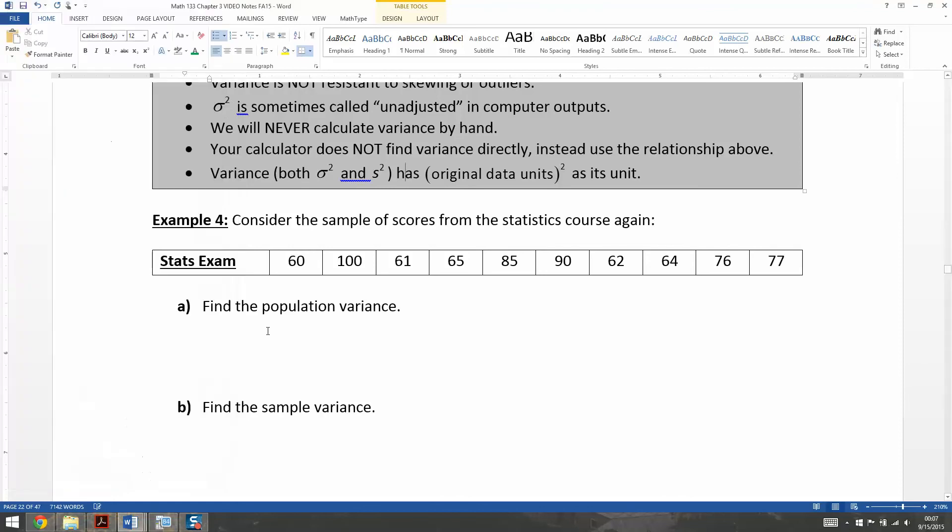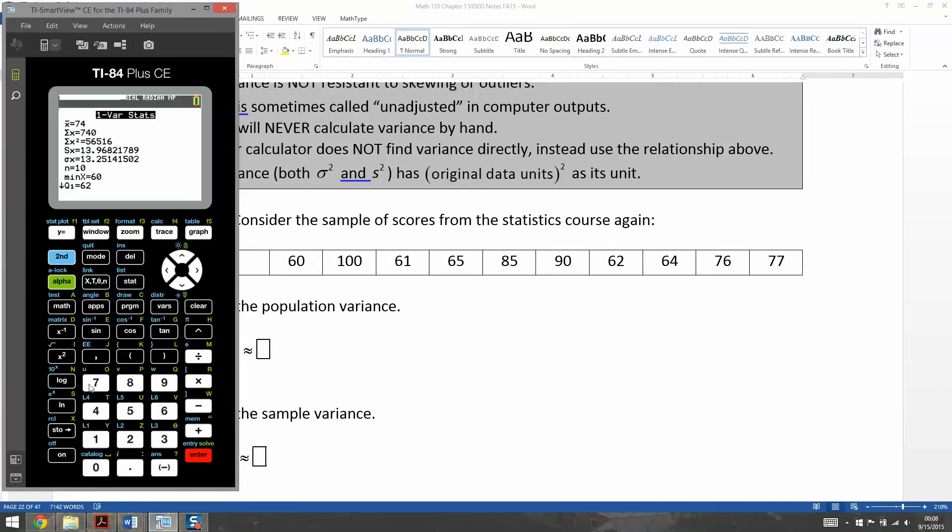There it is. So it finds SX is 13.968 and Sigma X is 13.251. Now, I could just type that, and I will. Now, the issue with just typing it into a calculator, let me type it, 13.251. Then I hit the squared button, the X squared button right there, enter. And I can see I get 175.589, which is fine. Now, the thing is that when I did this, I lost some accuracy. There were more decimal places to Sigma that I didn't keep.